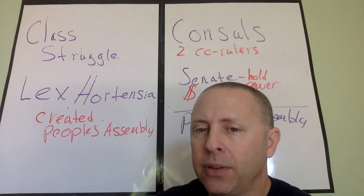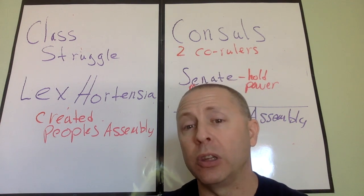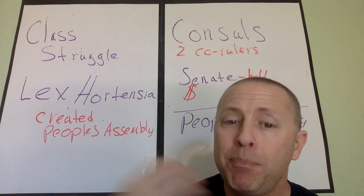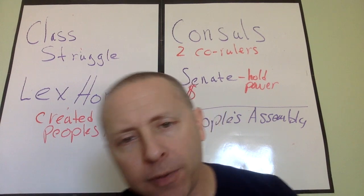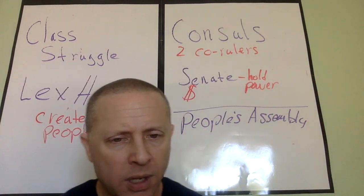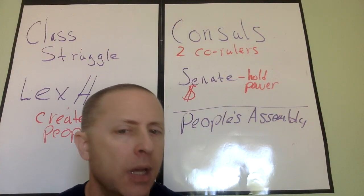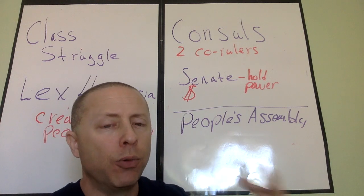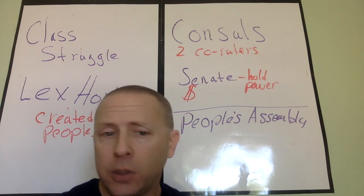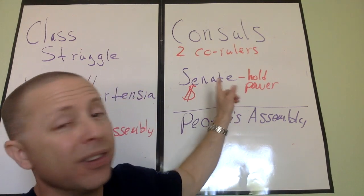What ended up happening is the people agitated for reform and change. So there was a law that was passed called the Lex Hortensia. This law changed and created a people's assembly. So then you had basically three different layers in the government: the consuls, the senate, and the people's assembly. The people's assembly was supposed to be a governing body for the common people to be able to make, create, pass, and veto laws. In reality, though, the power still resided with the senate.